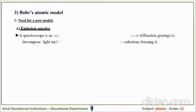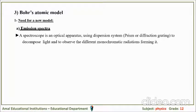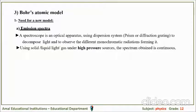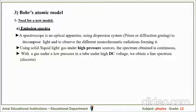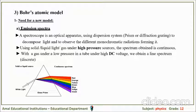Since in the emission spectrum — a spectroscope is an optical apparatus used for dispersion of a system, using a prism or diffraction grating to decompose light and observe different monochromatic radiations. Using a solid filament of a lamp, liquid, or molten metal under high pressure, the spectrum obtained is said to be continuous. With a white light source entering the spectroscope prism, light emerges forming a continuous visible spectrum.